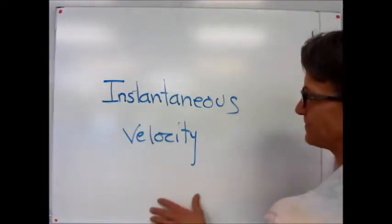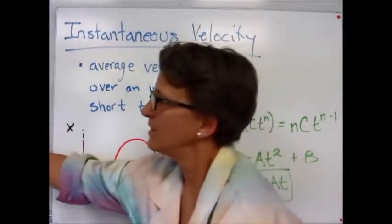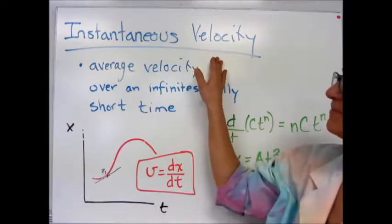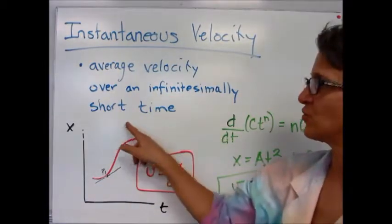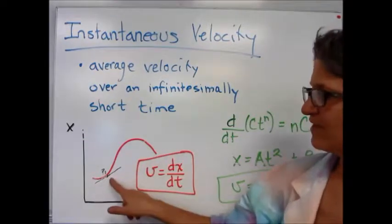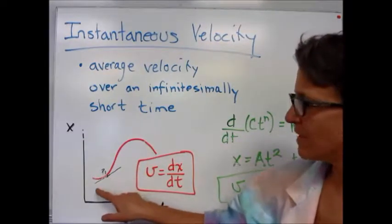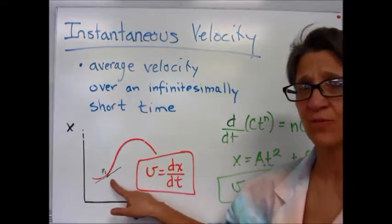Instantaneous velocity is defined as the average velocity over an infinitesimally short time. If we look at a curve, we can find the velocity at this point by drawing a tangent to the point and finding that slope.